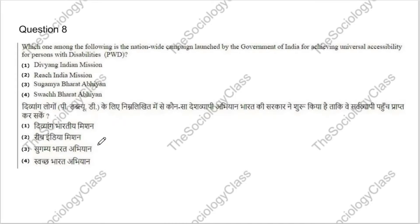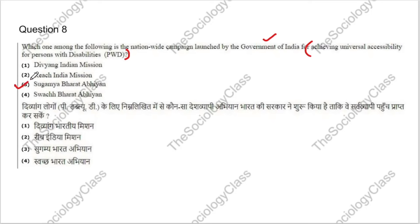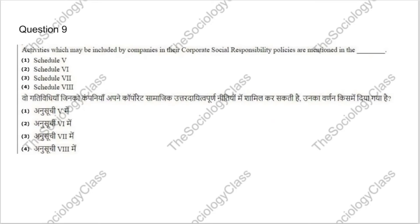Question 8: Which nationwide campaign was launched by the Government of India for achieving universal accessibility for persons with disabilities? Options: PWD Young Indian Mission, Reach India Mission, Sugmay Bharat Abhiyan, or Swachh Bharat Abhiyan. The correct answer is C — Sugmay Bharat Abhiyan.